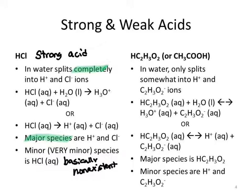Acetic acid is a weak acid. In solution, we will get some hydrogen ions and some acetate ions. We can write the equations either way — with hydronium or just H+. Here, the major species is intact acetic acid, and the minor species are the hydrogen ion and the acetate ion.